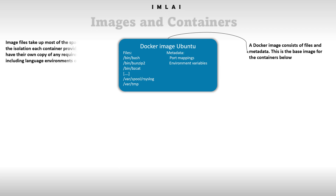Image files take up most of the space. A container can be spun up within a second, whereas building an image takes a large amount of time, because image files are heavy. Because of the isolation each container provides, they must have their own copy of any required tools, including language environments or libraries. If you have source code or packages, everything will be placed in the Docker image, which is why it is so large.